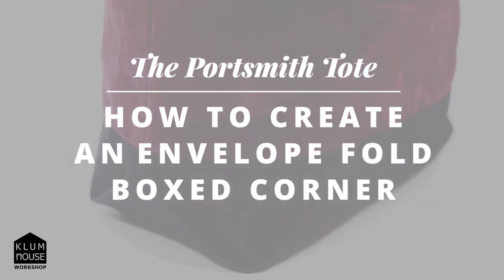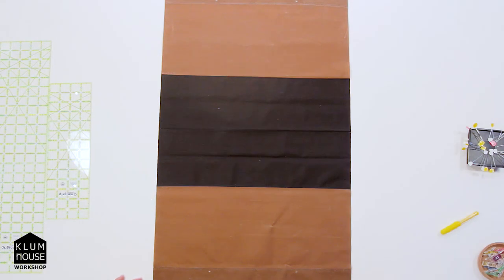So now we're going to do an envelope fold on the Portsmouth tote. You've already sewn the base on and you've sewn the hem, and this is the right side of the fabric, the side that's going to show.